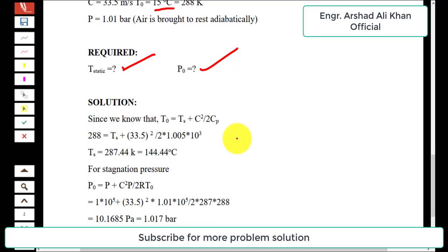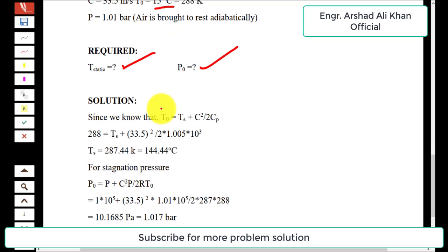We have an expression for stagnation temperature: T_0 = T_s + C²/(2C_p), where T_0 is the stagnation temperature, T_s is the static temperature, C is the flowing velocity, and C_p is the specific heat capacity at constant pressure for air. Now putting the values in this expression.